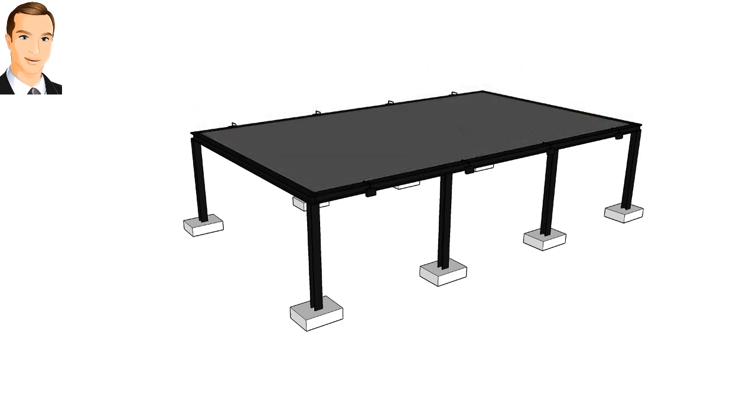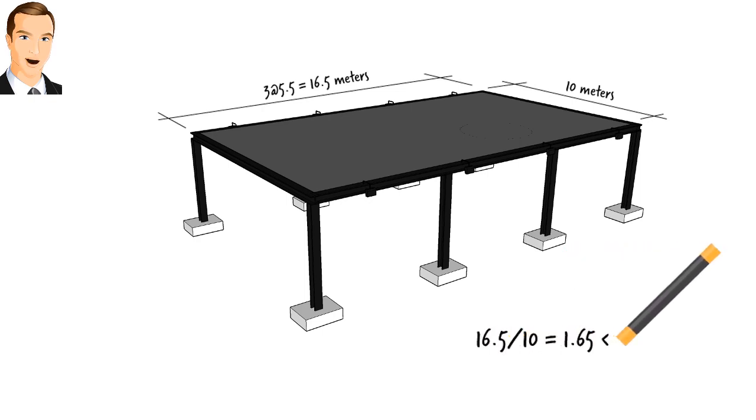This is the correct approach for load distribution when we are dealing with two-way slabs where the ratio of longer span to shorter span is less than two. Here, the ratio is 1.65.